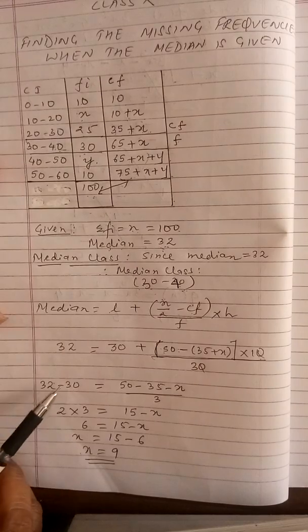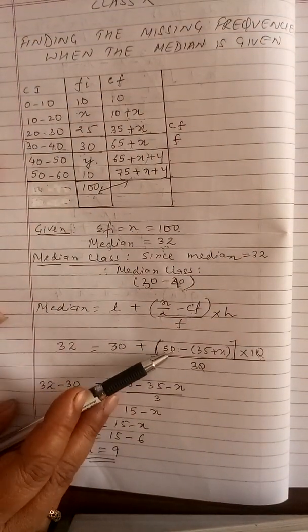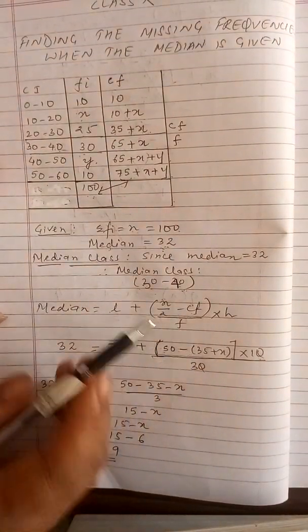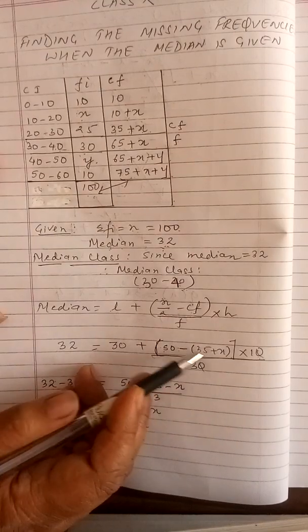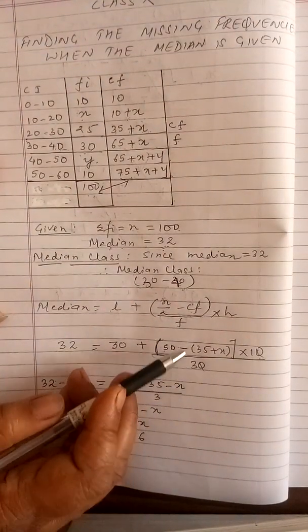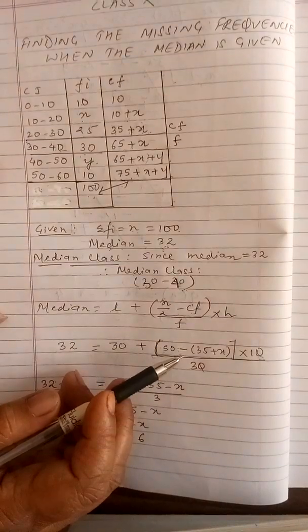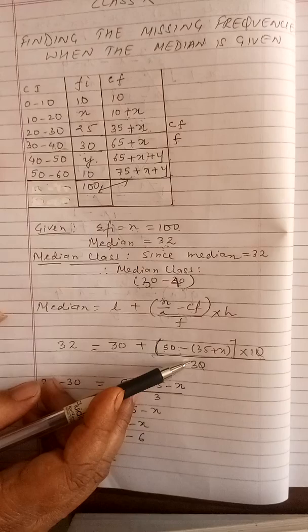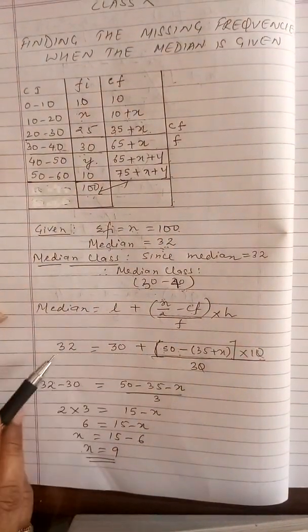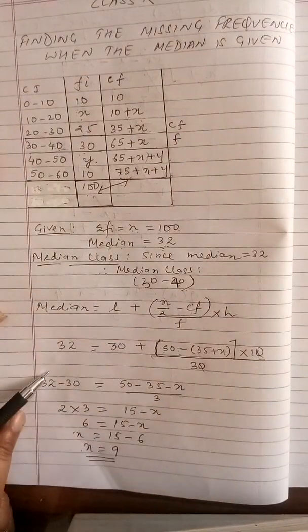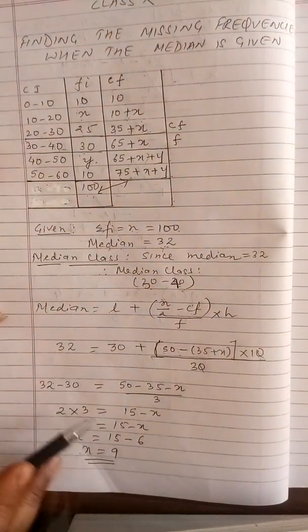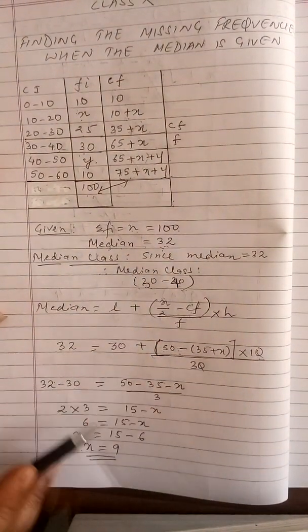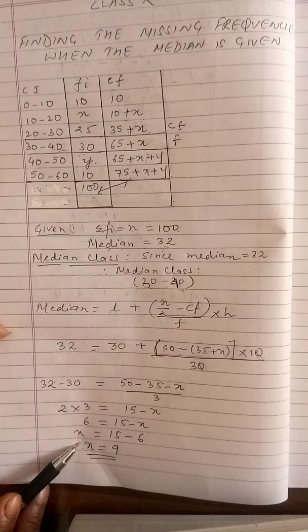Putting these values, I get 32 equal to 30 plus 50 minus 35 plus x. You have to very importantly remember to put a bracket here because there are two terms and there is a minus sign. If you do not put a bracket, the whole question will go wrong. So bracket 35 plus x, another bracket, into 10 upon 30. These two get cancelled, I transfer this 30, I get 2. On solving, I get x equal to 9.